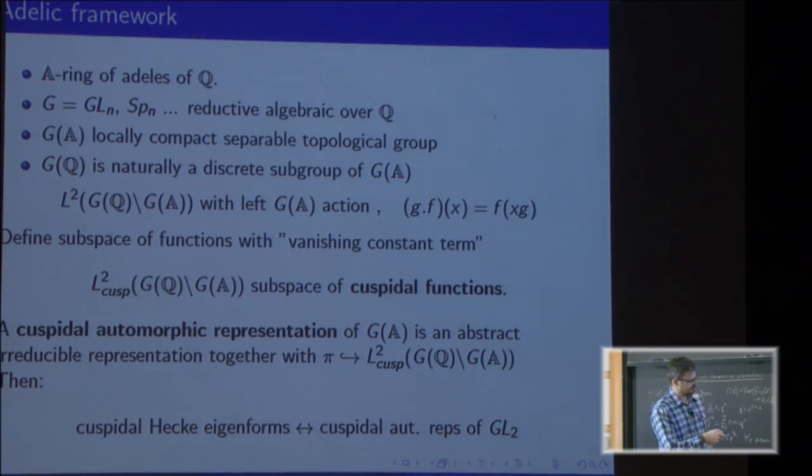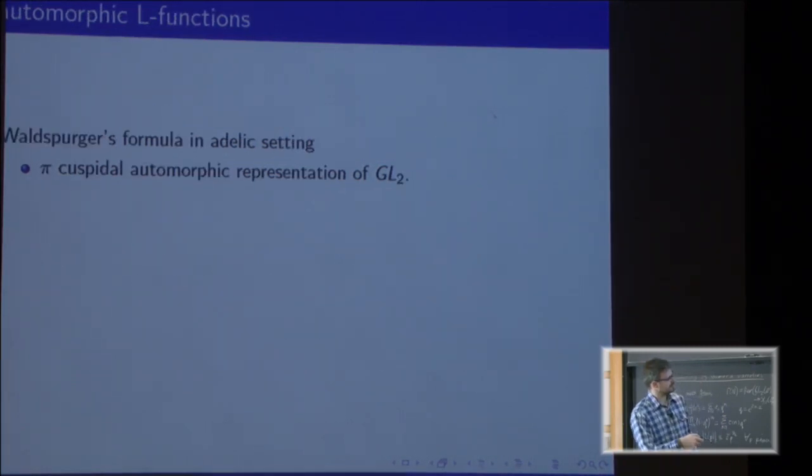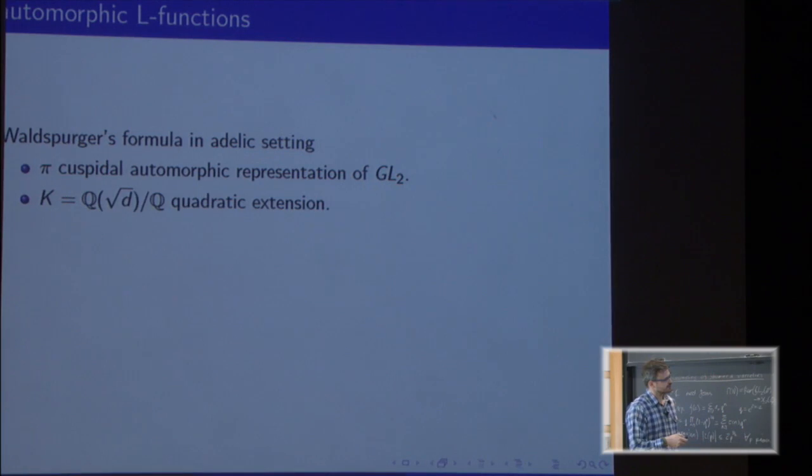Going back to Waldspurger's formula, how can we see it now? π will be a cuspidal automorphic representation of GL(2). We take a quadratic extension, so associated to it we can embed an anisotropic torus into GL(2).